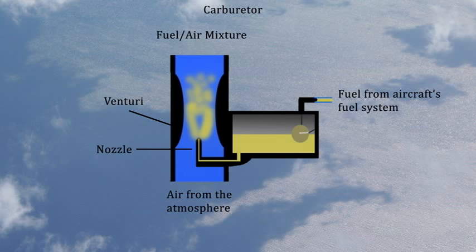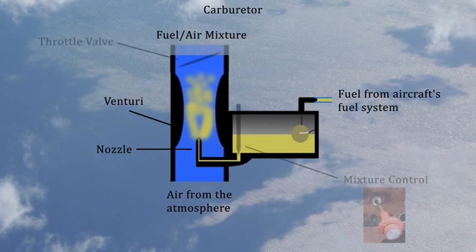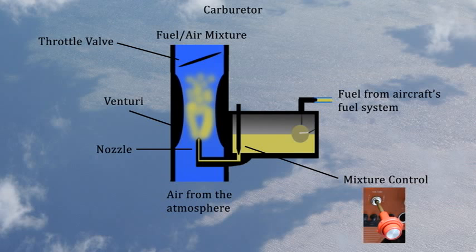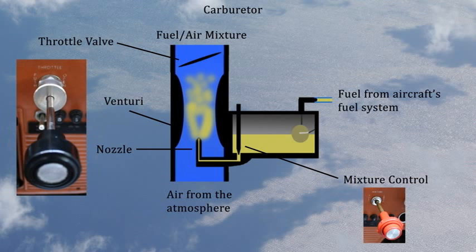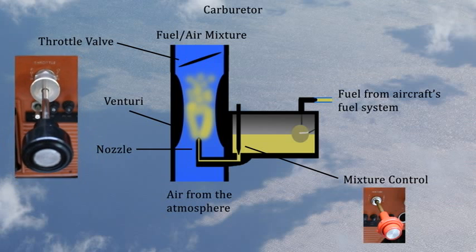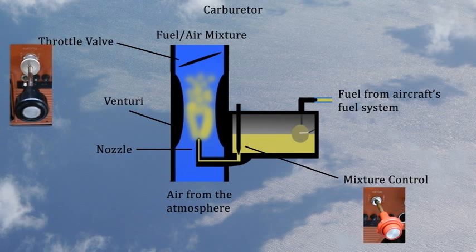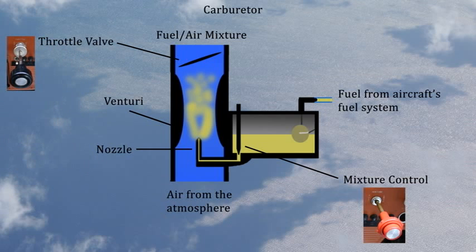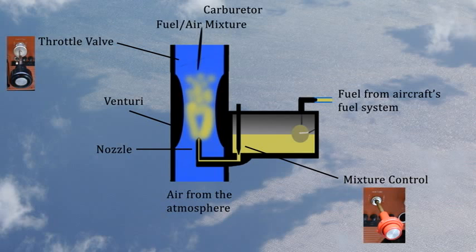The fuel-air mixture encounters a throttle valve inside the carburetor. The pilot manipulates the position of the throttle valve to adjust the engine's power. At idle power, the valve is nearly closed, greatly restricting the flow of fuel and air to the engine. At full power, the valve is completely open.